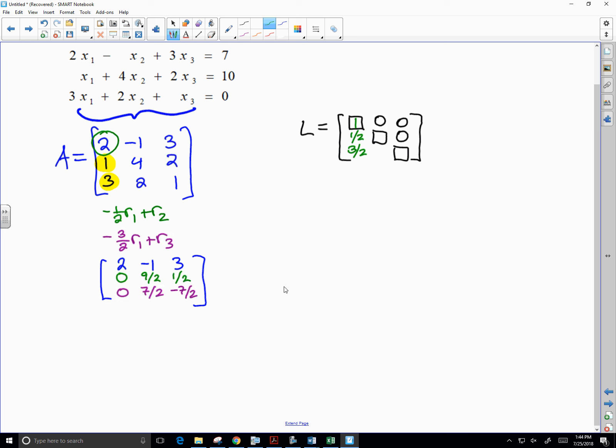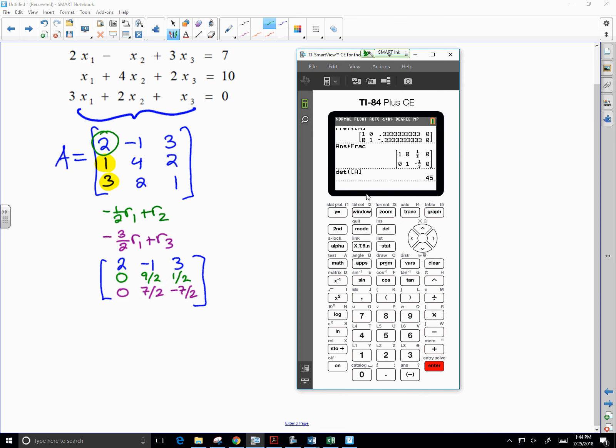So basically, if you were to take the thing that you want to cancel out and divide it by the pivot entry, that's actually what you would use to determine what you should be multiplying the row by in order to cause that cancellation in and of itself.